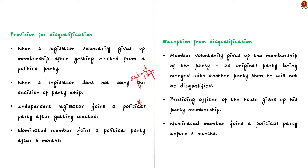There are also exceptions to disqualification. The first exception is regarding merger of political parties. If a member voluntarily gives up party membership as a result of his original party being merged with another party, he will not be disqualified — provided two-thirds of the members of such a party have agreed to that merger.